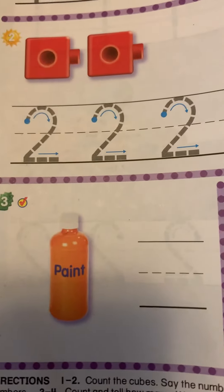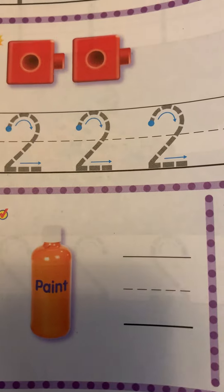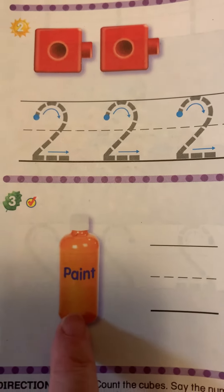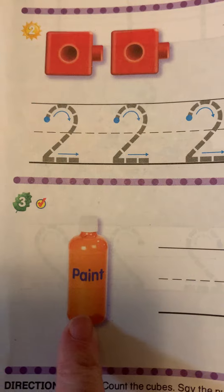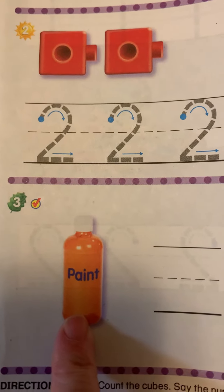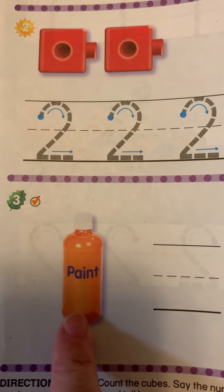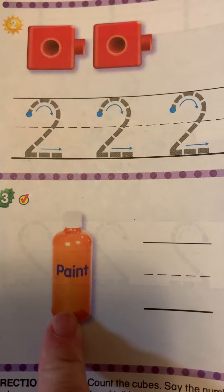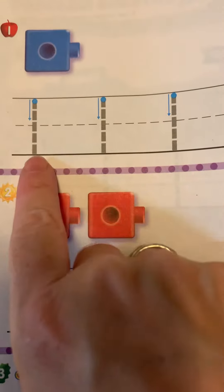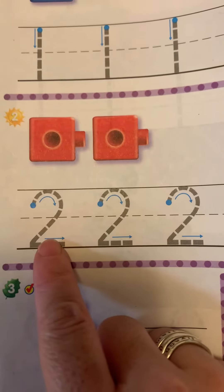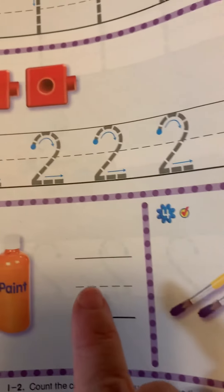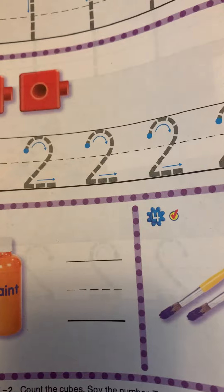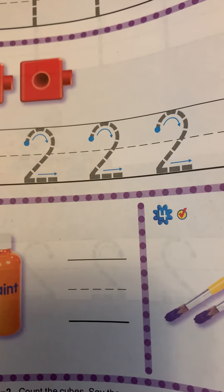Now, what we're going to do is we are going to count the object. Okay, how many paint bottles are there? There are one. There's just one paint bottle. So now we have to see what the number one looks like. Does it look like this or it goes down or like this? Write the correct answer here so Mrs. McNeil can see it.